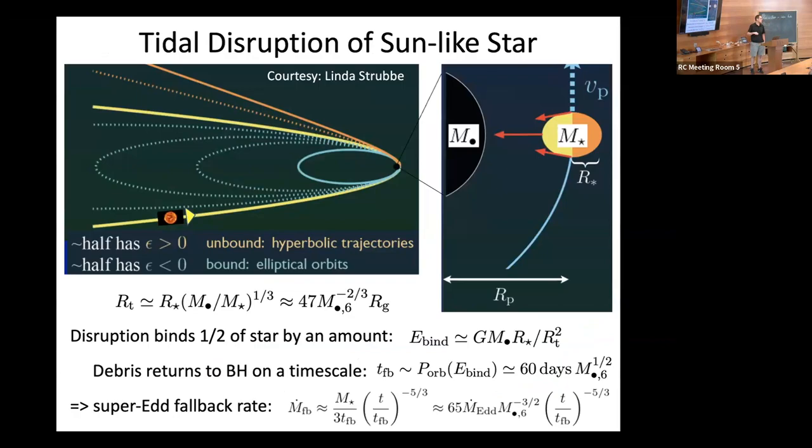Everything I'm going to say in this talk is for a sunlight star, solar mass, solar radius. A TDE happens when you have a star that gets placed onto an orbit where its pericenter radius goes inside the tidal radius, shredding the star apart. This process binds half of the star that's close to the black hole by a characteristic energy given by the potential times the radius of the star. Most of that, one half of course, gets unbound. The half that remains bound falls back on the orbital period corresponding to that binding energy, which is typically a month or so for a 10^6 solar mass black hole.